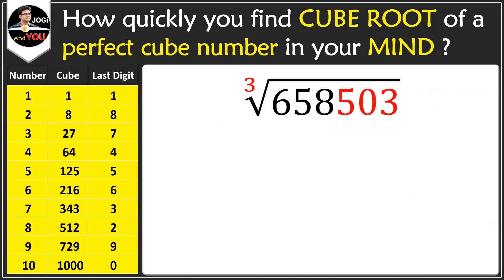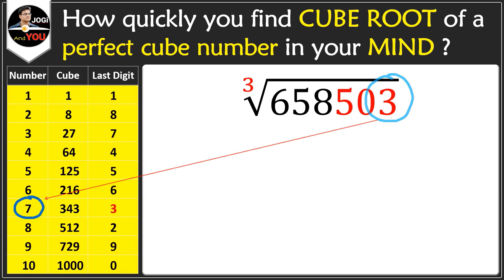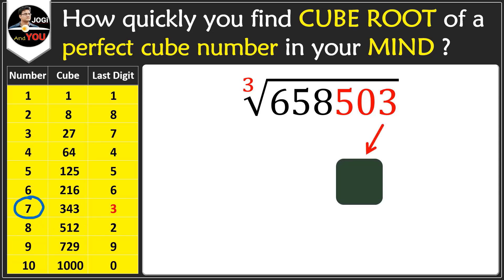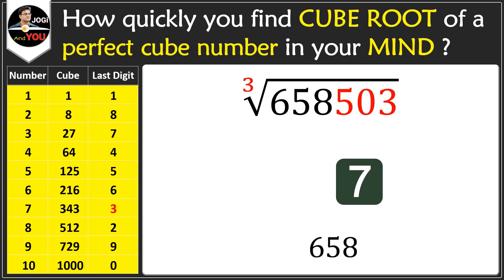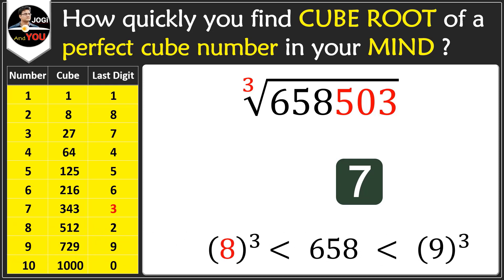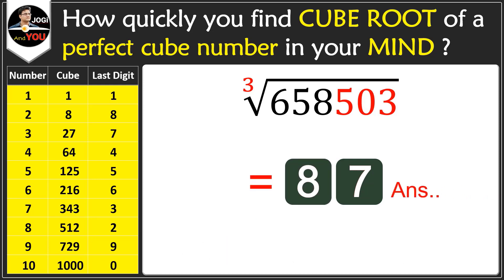Let's imagine they tell you the number 6,58,503. First, look at the last digit, which is 3. That corresponds to the number 7 because 3 and 7 flip. Put this 7 here. Then ignore the last 3 digits and look at 658 only. That's between the cube of 8 and the cube of 9, so we choose the lower one, which is 8. Therefore, the cube root of 6,58,503 is 87.